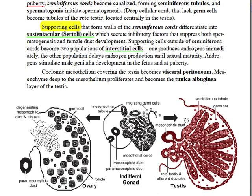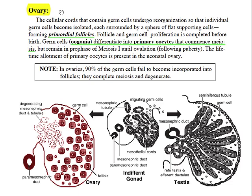Testosterone is first released within the embryo, where it promotes the growth of male genitalia. Subsequently, testosterone is released at puberty, where it converts seminiferous cords to seminiferous tubules and initiates spermatogenesis. In the ovary, germ cells become oogonia, and supporting cells form follicles surrounding individual oogonia. Within each primordial follicle, the germ cell initiates meiosis that is not completed until subsequent ovulation and fertilization. The female's lifetime allotment of germ cells and follicles is produced during embryogenesis.